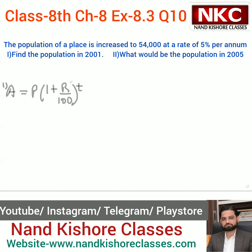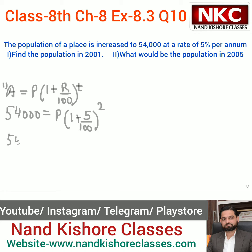In 2001 I need to find the population. After two years, in 2003, population becomes 54,000. So I put 54,000 on the left side — that is the final value A. P means population in 2001, so I keep P as it is. 1 plus r: rate is given as 5 upon 100. Time is two years because from 2001 to 2003 it takes two years.